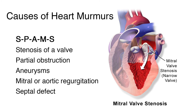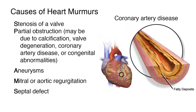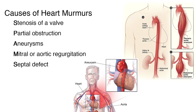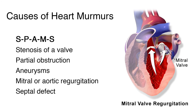S is for stenosis, or narrowing of a valve. P is for partial obstruction, which may be due to calcification, valve degeneration, coronary artery disease, or congenital abnormalities. A is for aneurysms, in which an area of the aorta has become weak and enlarged. M is for mitral or aortic regurgitation — when blood is leaking backward through the mitral or aortic valve. The heart has to work harder to force blood through the damaged valve, and over time this can weaken or enlarge the heart, leading to heart failure.